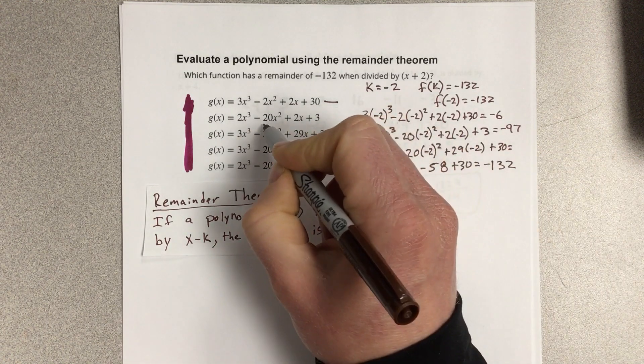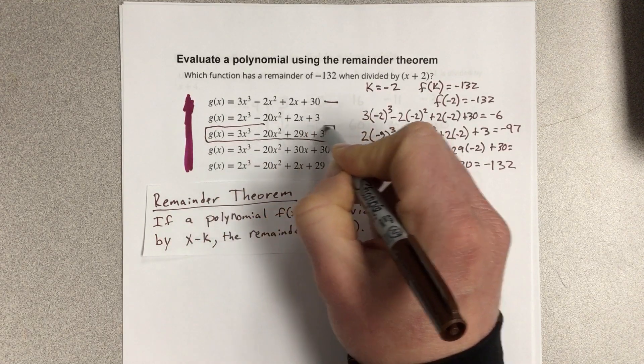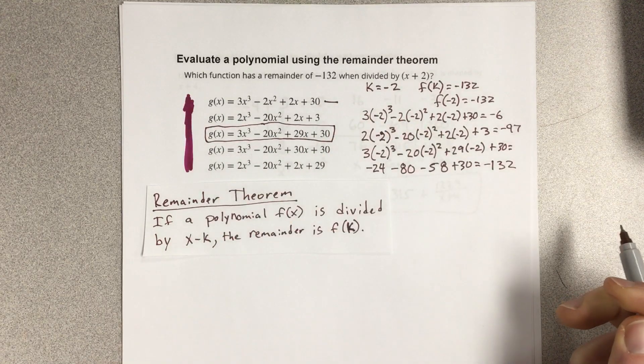So this is the function that has a remainder of negative 132 when divided by x plus 2.